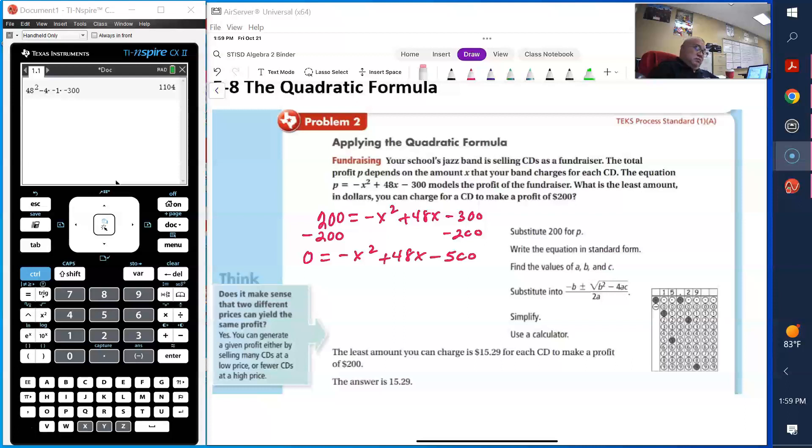The next step would be to identify a. In this case a is negative 1, b is 48, and c equals negative 500.